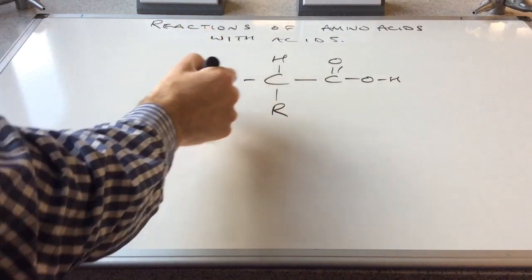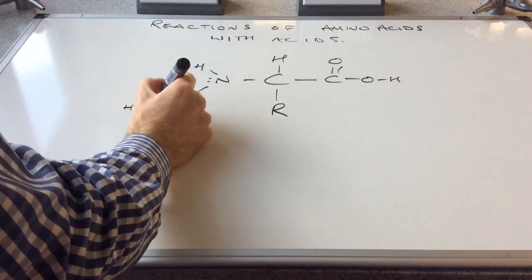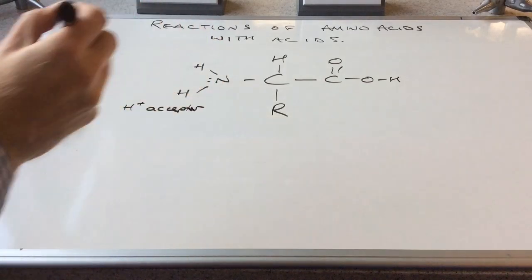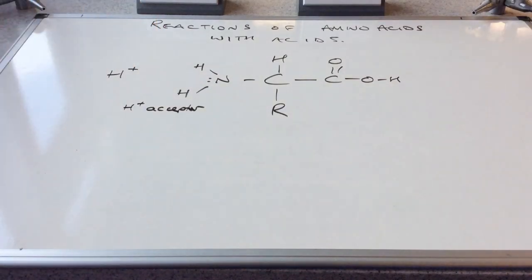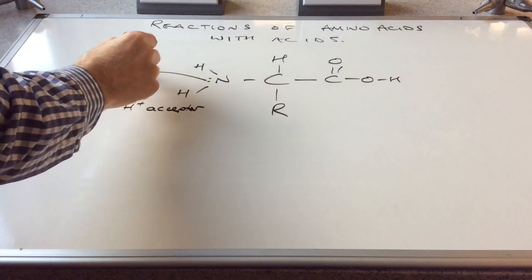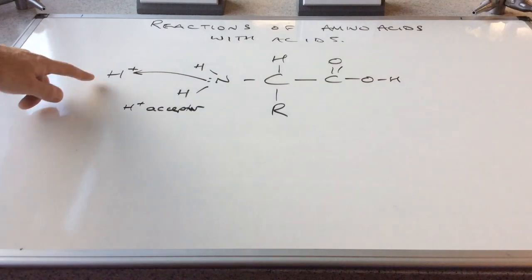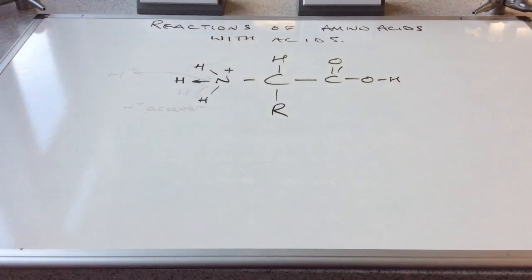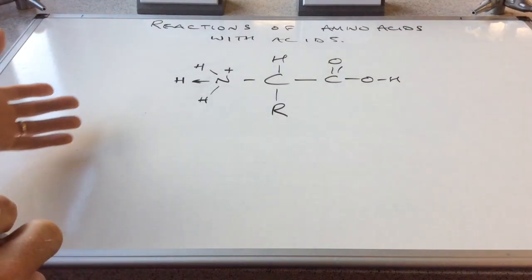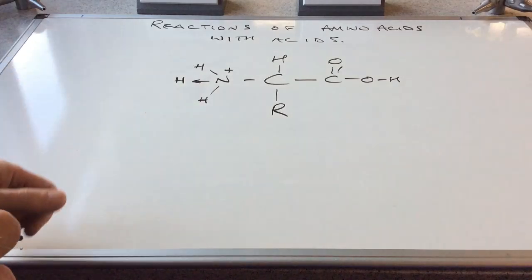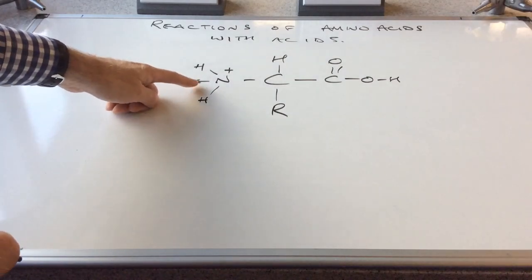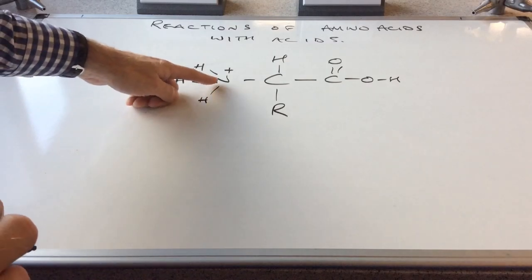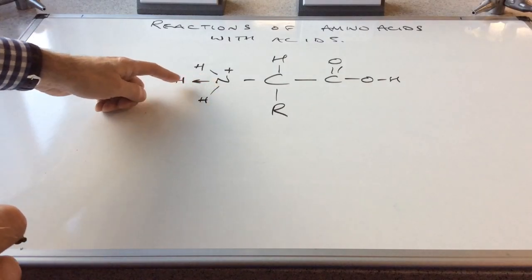So this part of the molecule is a proton acceptor and if you remember we have an H+ ion from an acid, then this pair of electrons will form a dative covalent bond with the H+ ion. And that would result in the formation of a positively charged ion like the one drawn up here. And you can see I've used an arrow there to indicate the dative covalent bond between the nitrogen and the H+ as it was.